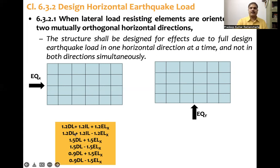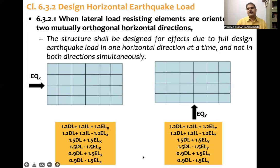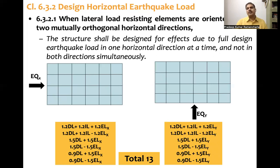In the Y direction, similarly there are six load combinations — a corresponding set mirroring the X direction. So six in X direction plus six in Y direction equals 12, plus the one combination of 1.5DL + 1.5IL gives a total of 13 load combinations when frames — lateral load resisting elements — are aligned in orthogonal directions.